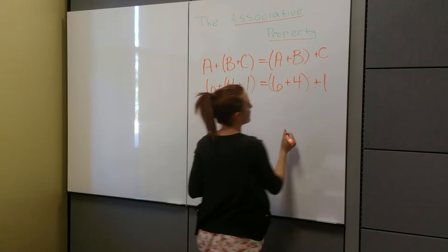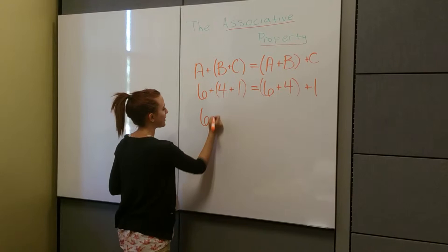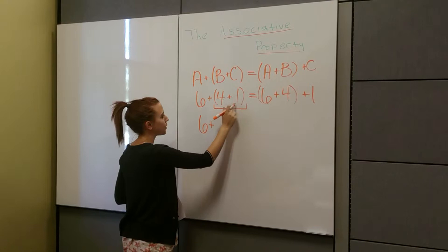And so if you remember our order of operations, we always start with parentheses. So if we start on the left side here, we'll write the 6, because that's outside the parentheses. And then we'll solve for our parentheses, so 4 plus 1 is 5, we'll write that in.